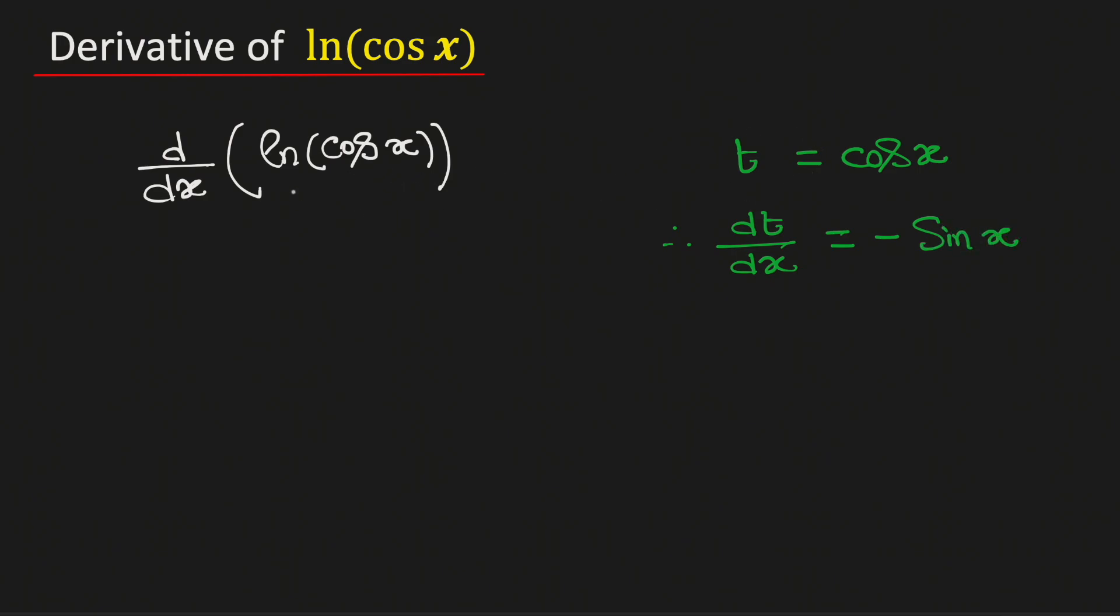Now we will substitute these values here. Therefore, ln of cosine of x will be equal to ln of t. See that this is a function of t, so we will consider its derivative with respect to t, and then we need to multiply with dt/dx. This is obtained by the chain rule of derivatives.